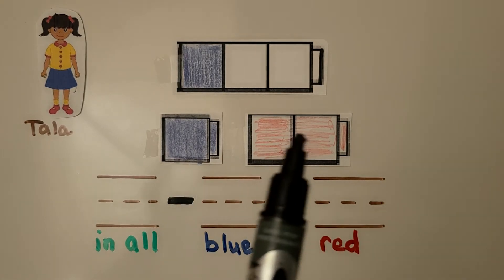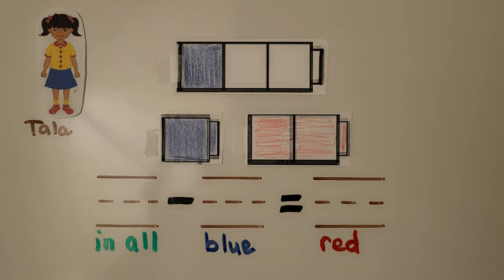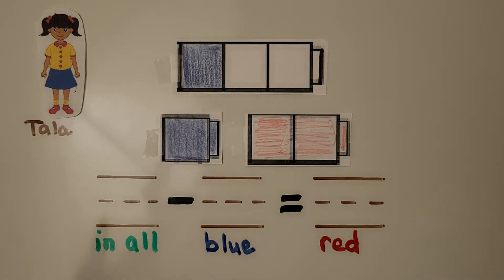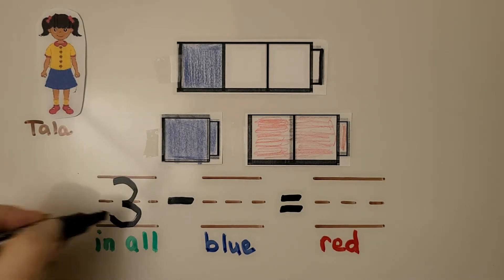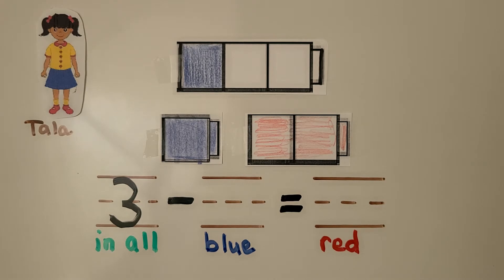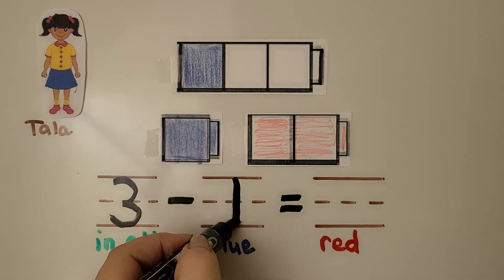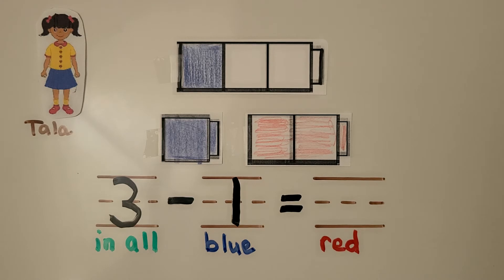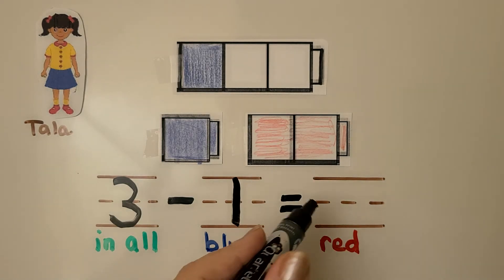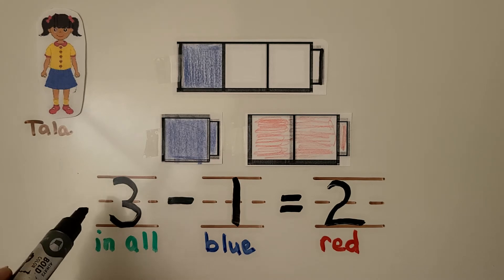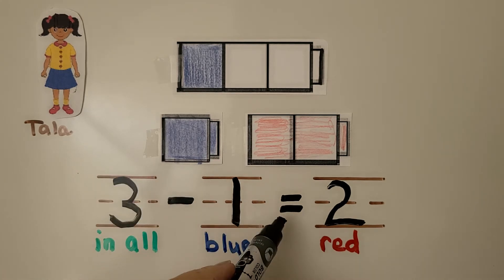When the cube train is taken apart, it helps us see how many are being taken away. We can write a subtraction equation to show how many in all. There were three cubes in all — we write the number three. There is one that is blue, so we write a one. And then how many are red? We see one, two are red.